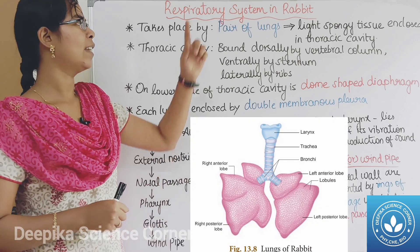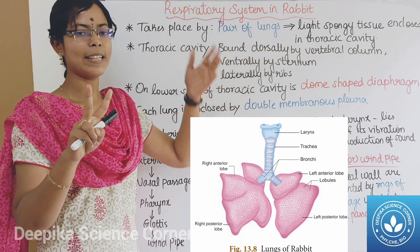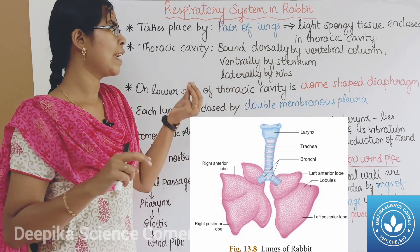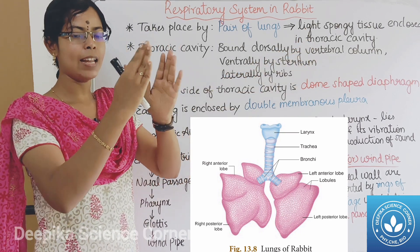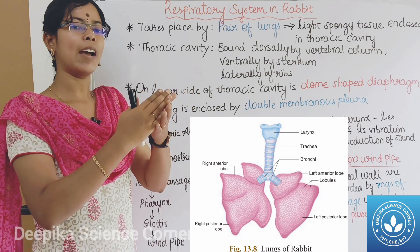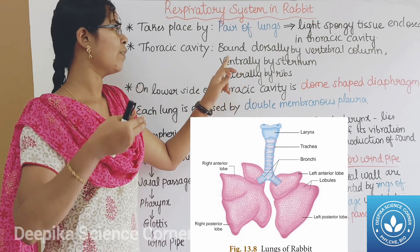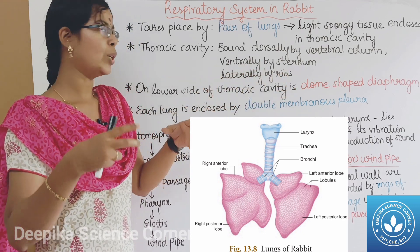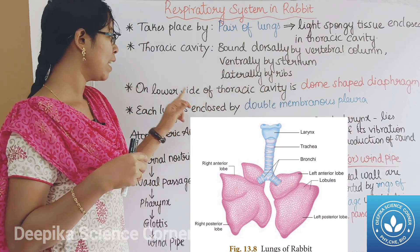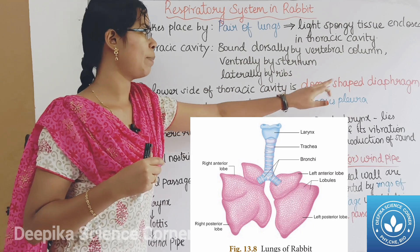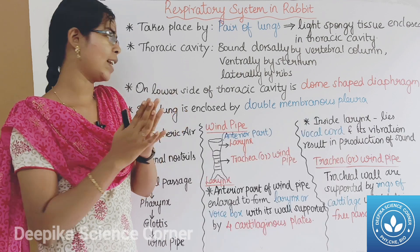Respiratory system of the rabbit. The rabbit has a pair of lungs — right side and left side. The lungs are light spongy tissue enclosed in the thoracic cavity. The thoracic cavity is bound dorsally by the vertebral column and laterally by the ribs.